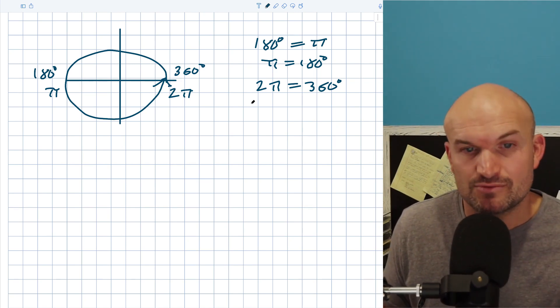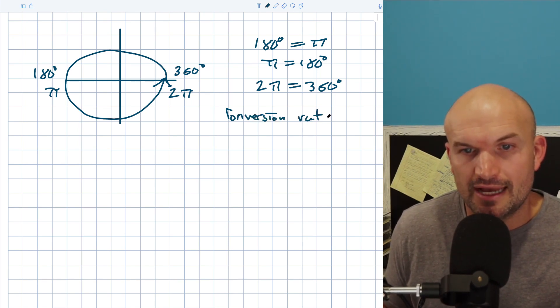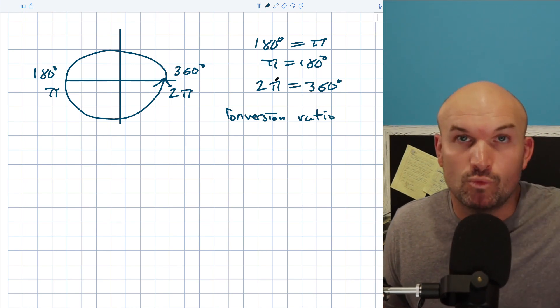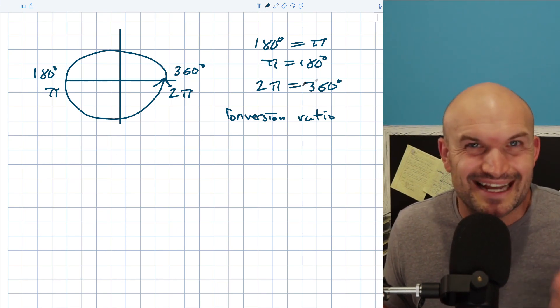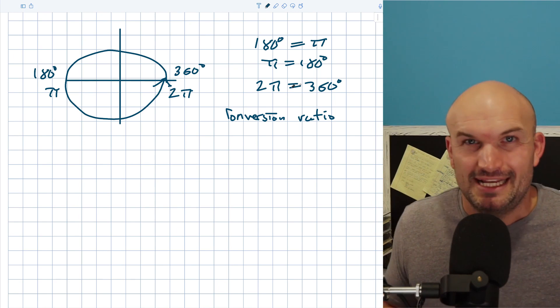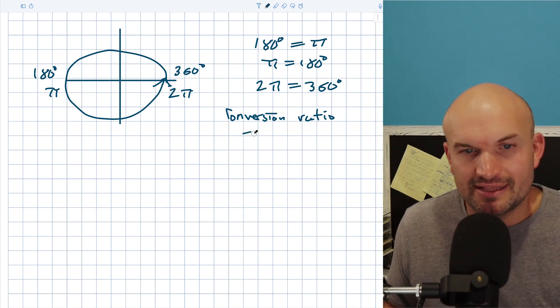So if I want to write this as what we call our conversion ratio, I'll say conversion ratio. What I'm going to do is simply just put one unit over the other unit. Now you could use 2π over 360, but I hope you'd agree the 2 divides into 360, that's going to eliminate, that's going to give us 180. So it's just going to be easier for us to use the π over 180.